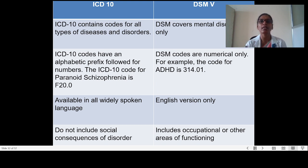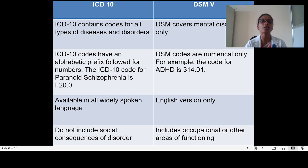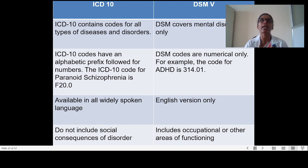Further differences: ICD-10 contains codes for all types of diseases and disorders, whereas DSM covers mental disorders only. ICD-10 codes have an alphabetic prefix followed by numbers — for example, the ICD-10 code for paranoid schizophrenia is F20.0 — whereas DSM codes are numerical only, for example the code for attention deficit hyperactivity disorder is 314.01. ICD-10 is available in all widely spoken languages, whereas DSM-4 is available only in English. In ICD-10, social consequences of disorder are not included, whereas in DSM-4 it includes occupational and other areas of functioning.